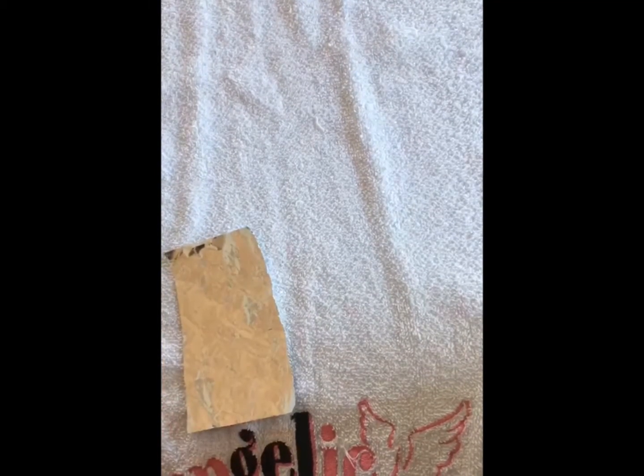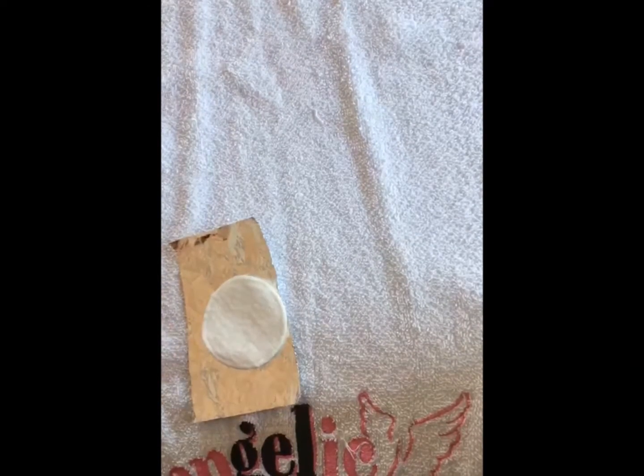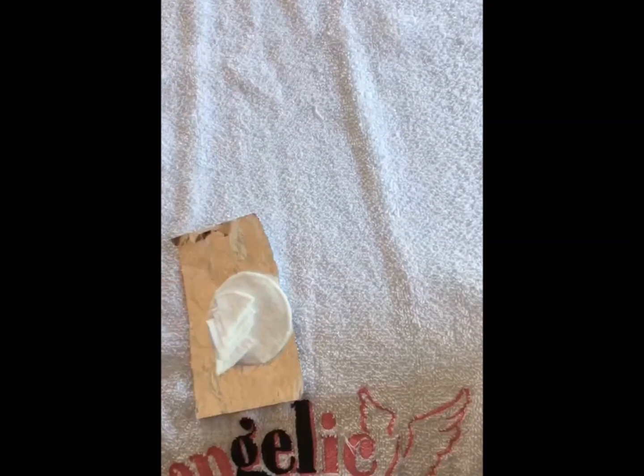To remove Easy Soak Gel Polish, you will need the following products: foil cut into 10 rectangular pieces, two cotton pads cut into 10 triangles.